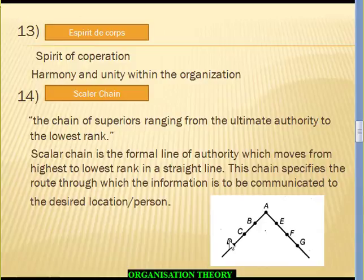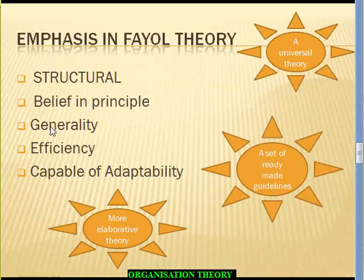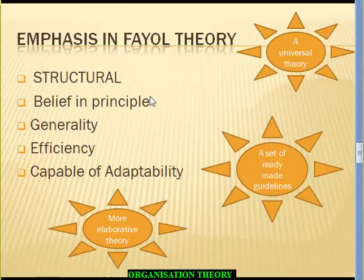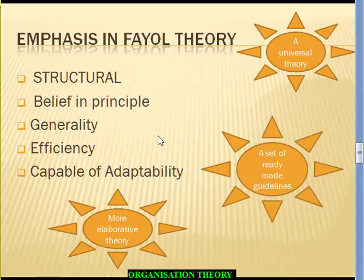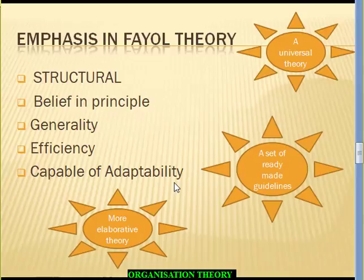Having covered all 14 principles, let us understand the crux of Fayol's theory. It is a very structural theory. When presented in 1916, organizations were managed in a haphazard, individualistic, trial-and-error manner, so this theory provided a systematic basis for managing organizations. Key characteristics: belief is placed in principles; it is general — a universal theory applicable to every organization; the focus is on efficiency and effectiveness; and crucially, it is capable of adaptability — these are not a rigid set of rules.